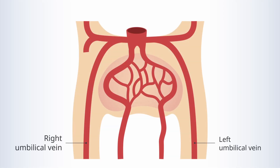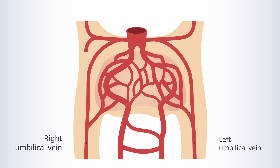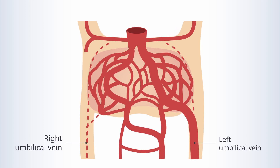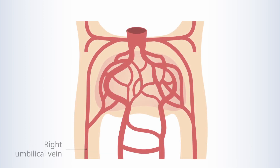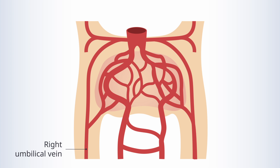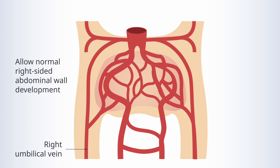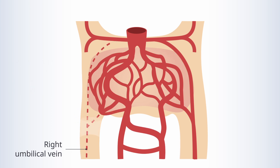Regarding why this defect typically occurs on the right-hand side, let's get into vascular development. The umbilical veins in the developing placenta and fetus are originally bilateral, draining into the sinus venosus. In the second month of gestation, there is complete regression of the right umbilical vein, while the left persists, connecting to the ductus venosus within the developing liver. While it is patent, the right umbilical vein is important for supplying the nutritional building blocks for normal right-sided abdominal wall development. If the right umbilical vein closes prematurely, the abdominal wall will be incompletely formed, leading to the gastroschisis seen at birth — which explains the right-sided predominance of these lesions.